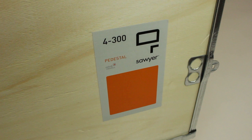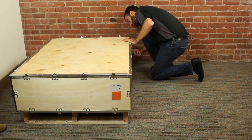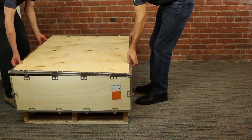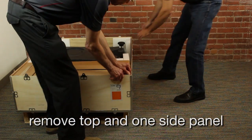If you ordered a pedestal, start by opening the pedestal crate, box four, and assembling the pedestal. Use a small flathead screwdriver to pry up the tabs so they are straight. Now remove the top and sides of the crate.